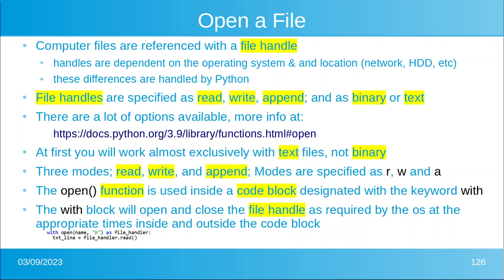This is how you open a file. A file is a physical thing on a hard disk, removable disk, or memory card. An operating system will give you a file handle, which is technically a pointer for the hard disk drive or external drive. Handles depend on the operating system, but Python takes care of all of that. You can specify the file handle as read, write, or append, and as binary or text. Append adds to the end of an existing file, write creates a new file or overwrites the existing one, and read reads from the file.